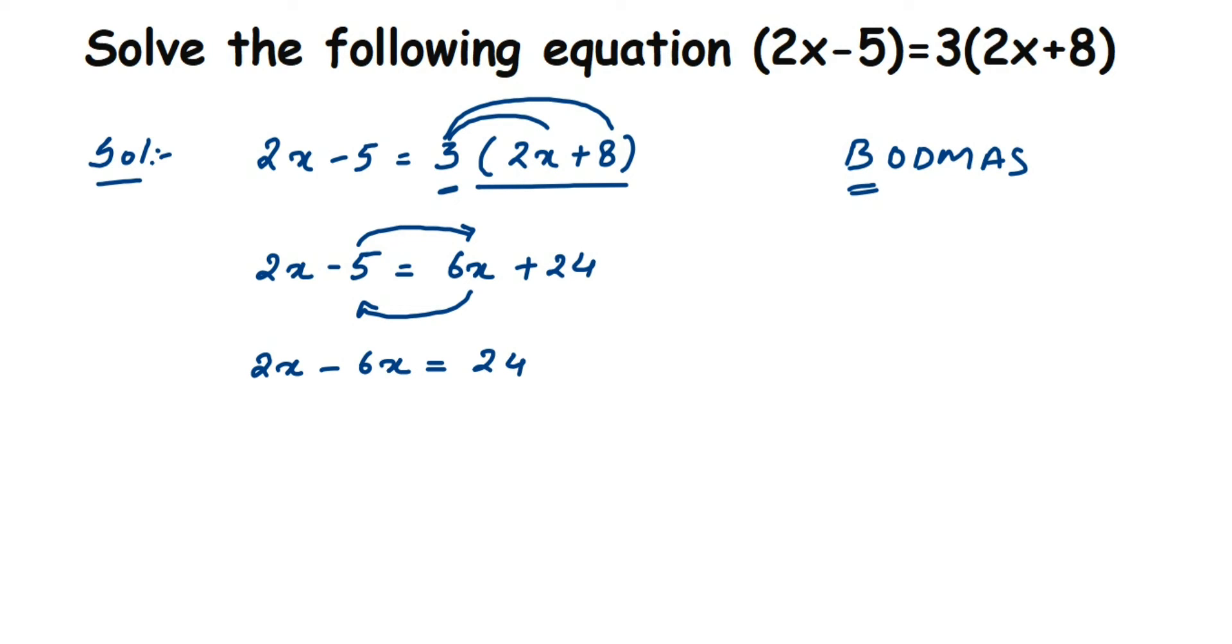2x minus 6x is minus 4x. 2 minus 6 is minus 4, so minus 4x equals 24 plus 5, which is 29. We get 29.